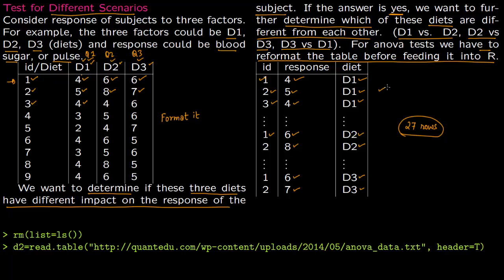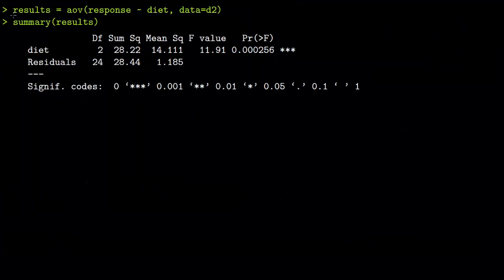Once you format the data, you feed it into R. First clear the memory, then read the data in — you should go to the link shown and see how the data looks. The header is set to true. Once the data is loaded, we run the ANOVA model. You name the model 'results', run analysis of variance with response as a function of diet in dataset D2, which is where we stored our data.